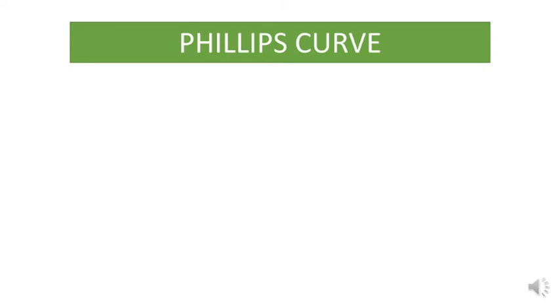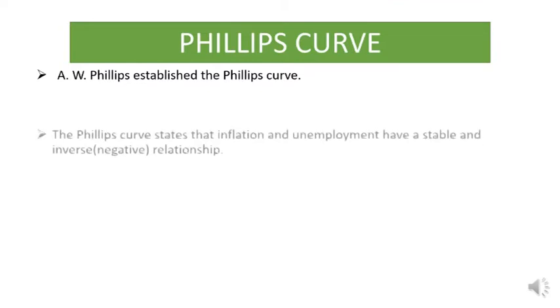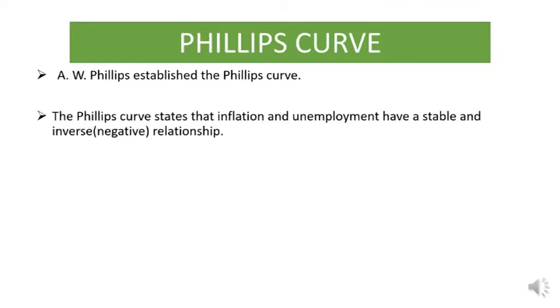Let us talk about the Phillips Curve. The Phillips Curve was established by A.W. Phillips, so it is named after A.W. Phillips. It states that inflation and unemployment have a stable and inverse relationship — inverse meaning negative.